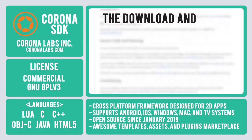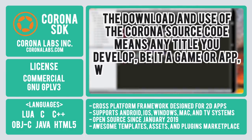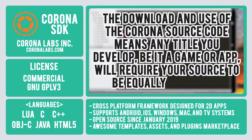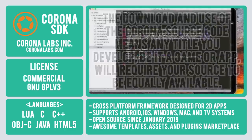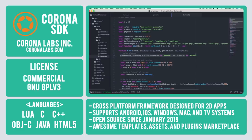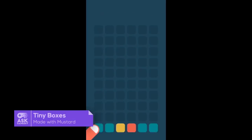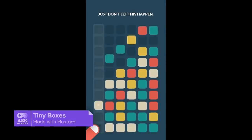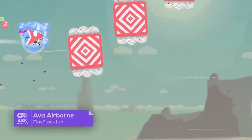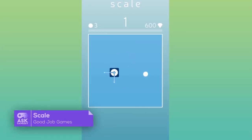The difference being: the download and use of the Corona source code means any title you develop, be it a game or app, will require your source to be equally available. The core programming language began with Lua, with later additions of native extensions for other languages including C, C++, Objective-C, Java, and HTML5. Some hall of fame apps built with Corona include Tiny Boxes, AVA Airborne, and Scale.